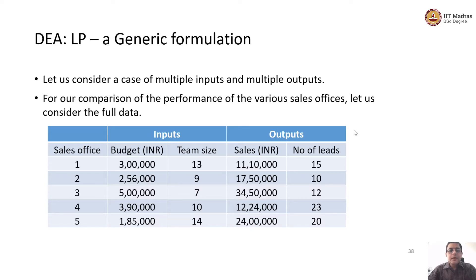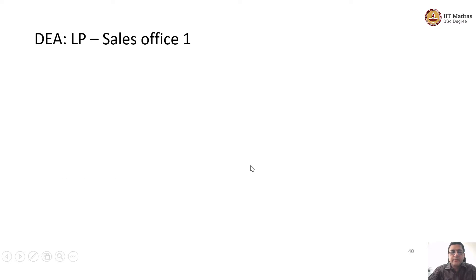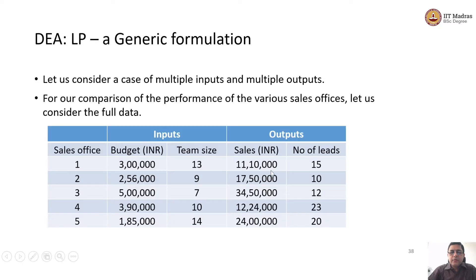There are two inputs and two outputs. Every sales office is given some budget and the budget is not constant — they are given different budgets and different teams with different numbers of people. They are told to get as much sales and as many leads as possible, so the sales is not kept constant at 10 lakhs. Everybody achieves whatever sales they can.